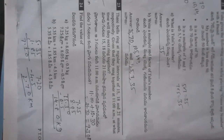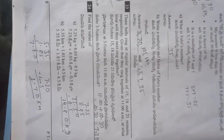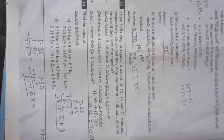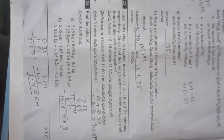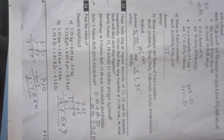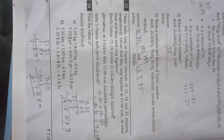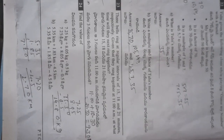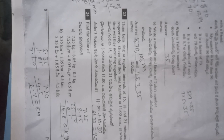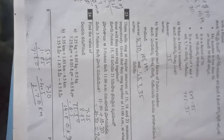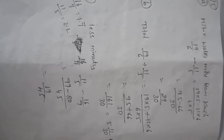Find the value of 7.25 plus 8.05, which equals 15.30. Subtract 0.5 to get 14.8. Also, 5.35 plus 1.85 equals 7.20; minus 4.5 gives 2.70.